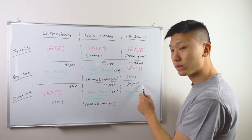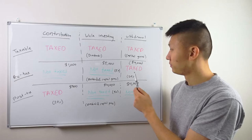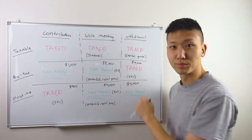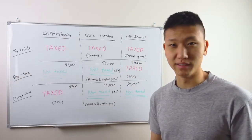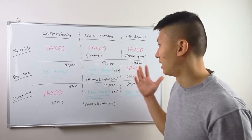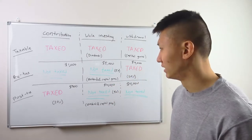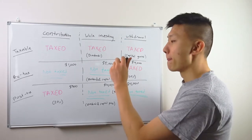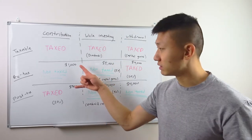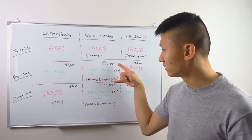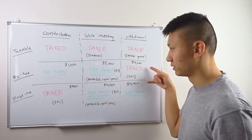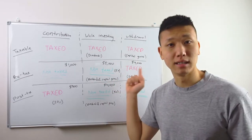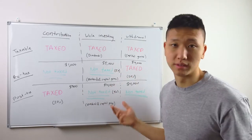We take all $4,000 out, and because post-tax accounts are not taxed at withdrawal, you keep the full $4,000. Comparing pre-tax and post-tax: if the tax rate and growth rate are both the same, they come out the same — $4,000 and $4,000. Even though the amounts put in differ, at the end it comes out the same because you're just getting taxed at different times.